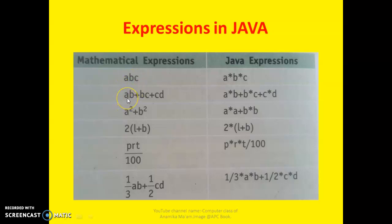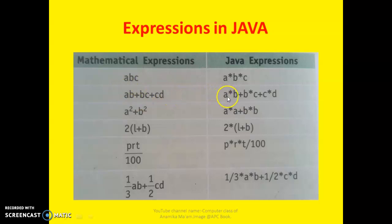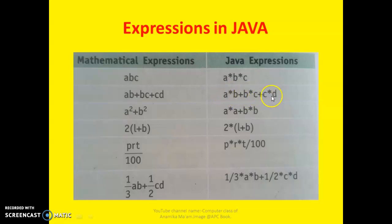The second mathematical expression: in math we write AB plus BC plus C, but the same expression in Java requires an asterisk for every multiplication. So it becomes A*B plus B*C plus B*C plus B*B. So that is how we represent such expressions in Java.